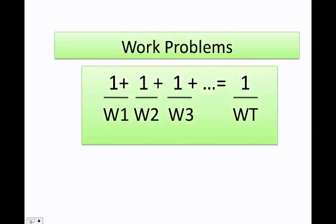Work problems need to be set up this way. Let's say they give you two people working on a project, or maybe two machines, or three people — anything that has to do with work. Basically, I'm always going to set up my formula like this: one divided by the work of the first person or machine, plus one divided by the work of the second person or machine, all equals one over the total.